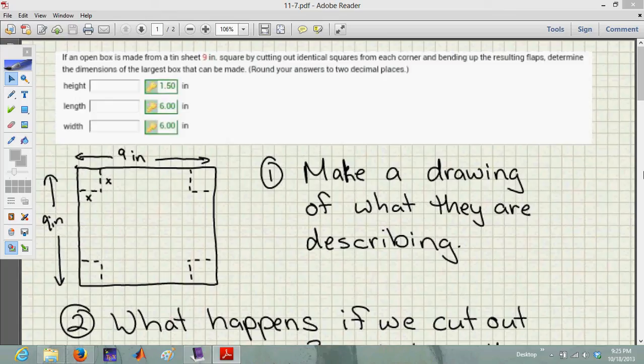So what does the question say? They're telling us that we want to make an open box. An open box just means that there's no top on the box. We're just going to have a base and four sides. And it's going to be made from a sheet of tin that's 9 inches square, by cutting out identical squares from each corner and bending up the flaps. They want us to determine the dimensions of the largest box that can be made.